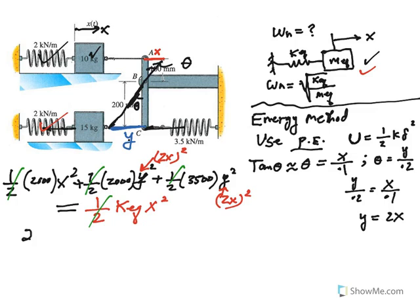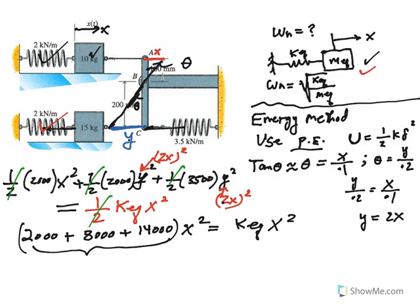Look what happens. We have 2,000 if you factor X squared out, we end up getting an 8,000 here and a 14,000, because you have 4 times 3,500 and you square the 2. If you factor X squared out, then you have K equivalent X squared. This becomes K equivalent, which happens to be 24,000 newtons per meter. So that was easy.